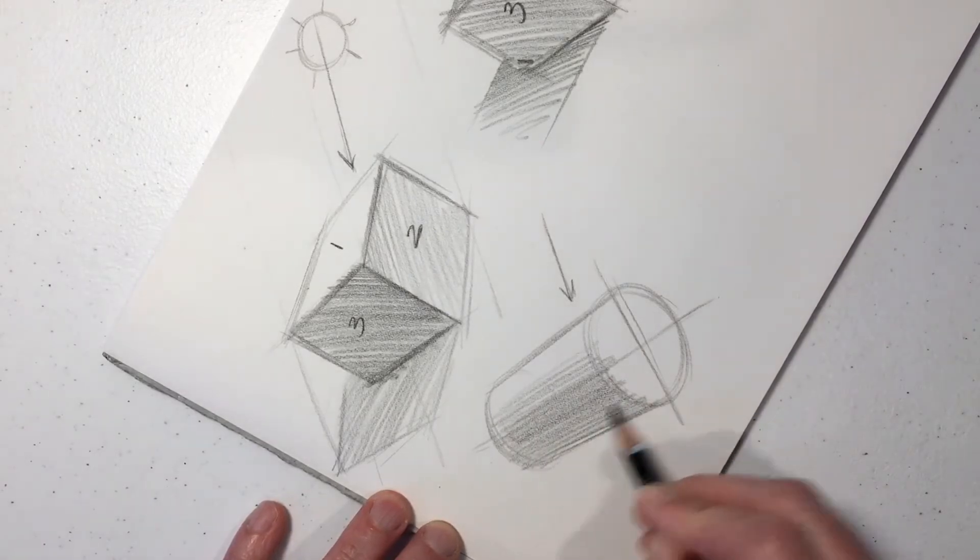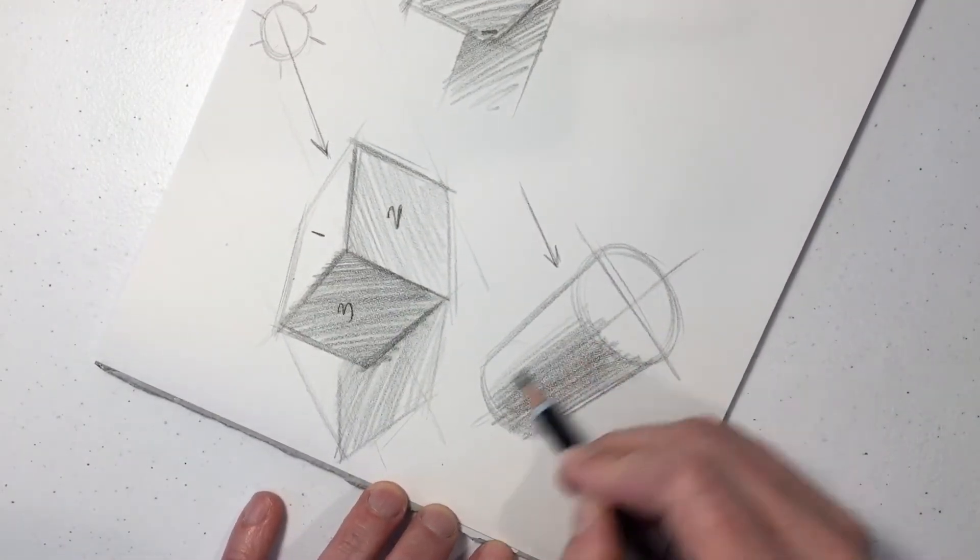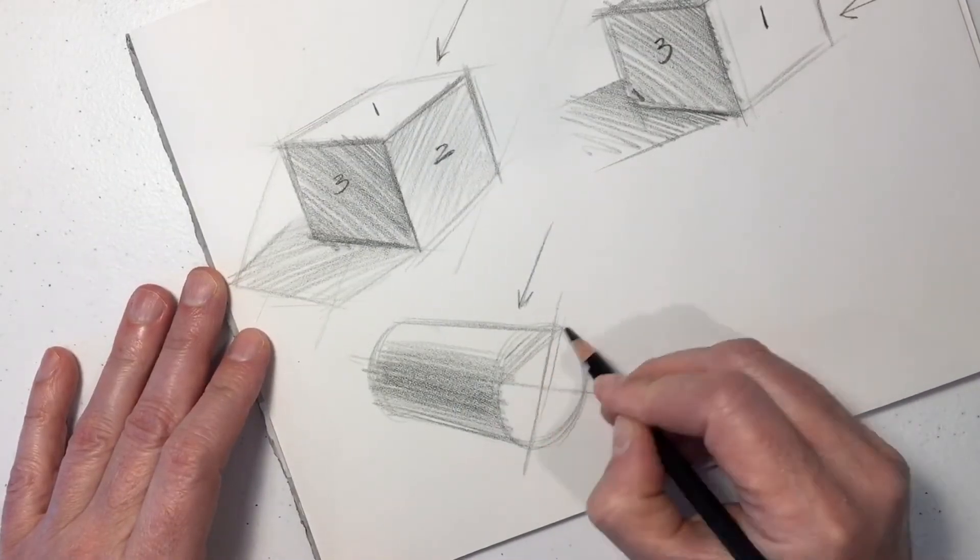Only this time, we create a soft gradation, because this is a round object, from the lightest surface to the darkest surface.